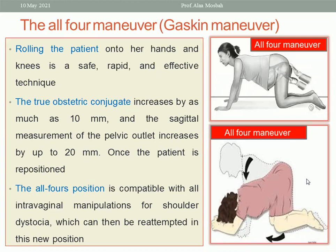If failed, you can go to the all-fours maneuver, as you see in this picture. This is a position where the patient is on her hands and knees. You can also do this with approximation of the thighs to the abdomen, simulating the McRoberts position. The true obstetric conjugate of the inlet is increased by 10 mm and the sagittal measurement of the pelvic outlet increased by 20 mm in this position. All intravaginal manipulation for shoulder dystocia can be performed in this position.